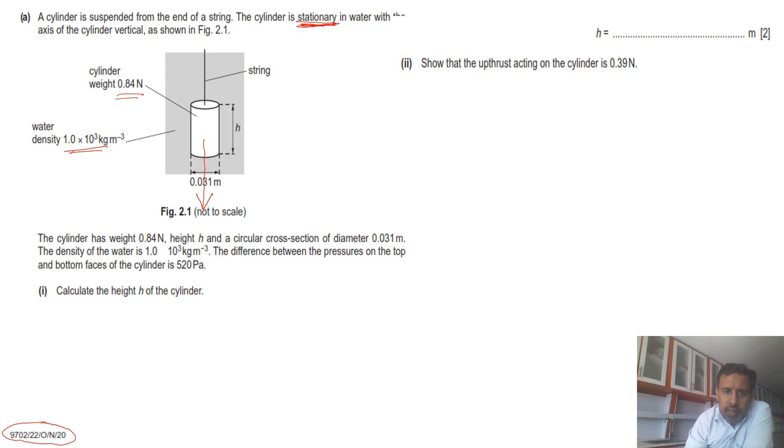The cylinder's weight and height is given. The cross section diameter of the cylinder is also given. Its density is given, and the pressure difference between top and bottom is 520. It means the pressure at the top is P1 and the pressure at the bottom is P2. Then delta P is the pressure difference: 520 Pascal.